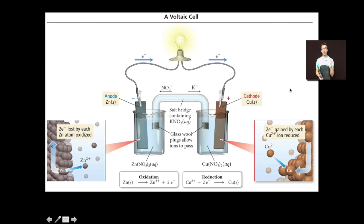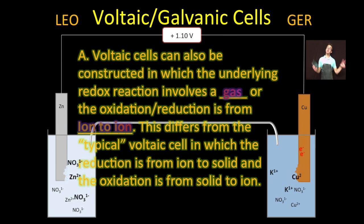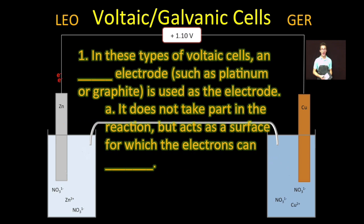Electrons have been flowing way too long for this guy. Now, there's a great image in your notes that illustrates everything about a voltaic cell, everything that I've just talked about. Take a moment, stare at that image. And then lastly, just a couple of quick notes. Recognize that voltaic cells can also be constructed in which the underlying reaction involves a gas or the oxidation reduction is from an ion to another ion. This differs from a typical voltaic cell in which the reduction is from ion to solid and the oxidation is from solid to ion. Don't panic. All that means is what you're going to see are inert electrodes, such as platinum or graphite.